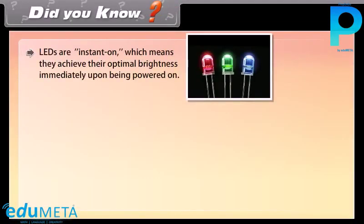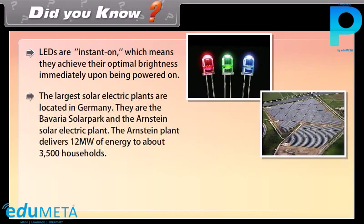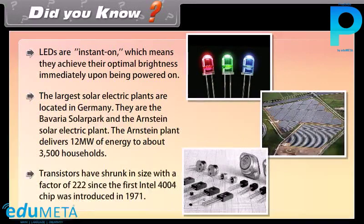Did you know? LEDs are instant-on, meaning they achieve optimal brightness immediately upon being powered on. The largest solar electric plants are located in Germany — the Bavaria Solar Park and the Arnstein Solar Electric Plant, which delivers 12 megawatts of energy to about 3,500 households. Transistors have shrunk in size by a factor of 222 since the first Intel 4004 chip was introduced in 1971.